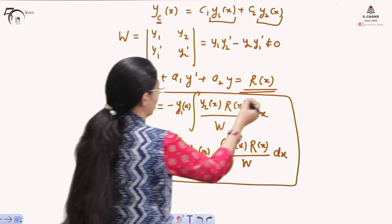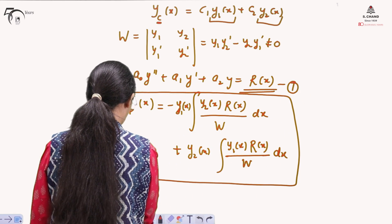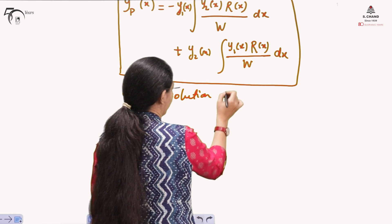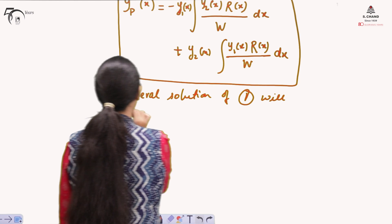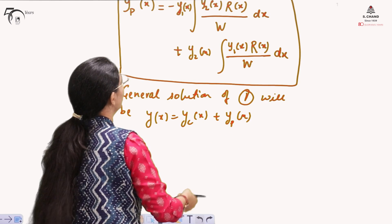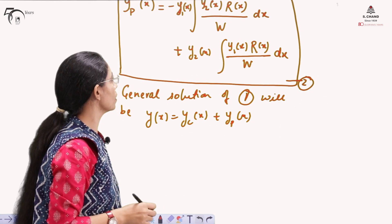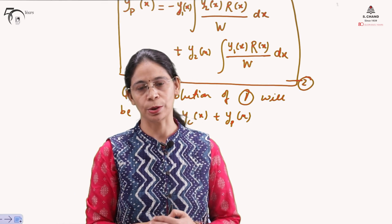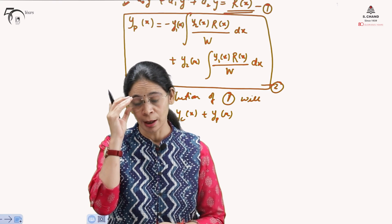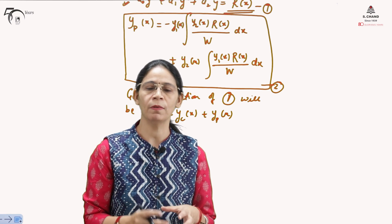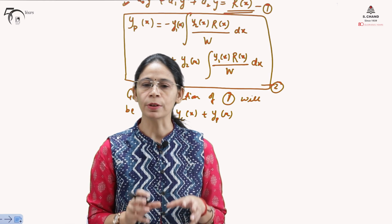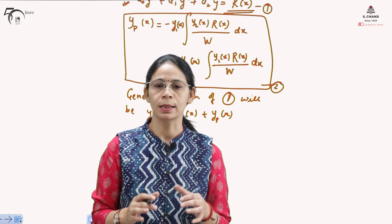The general solution of this differential equation will be written as Y(x) = Y_C(x) + Y_P(x), where Y_C is already known and Y_P is calculated using the formula involving the Wronskian, Y₁, Y₂, and the right-hand side R(x). This is not the only method available to find the particular integral, but we will be discussing only the method of variation of parameters.